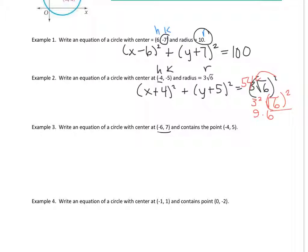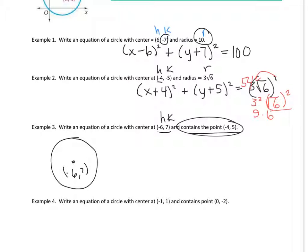This one is different: write an equation of a circle with center (negative 6, 7) — this is h and k — and containing the point (negative 4, 5). So the center is at negative 6, 7, and another point on the circle is negative 4, 5. This time we don't have the radius; we need to figure out what the radius is. The distance between the center and the point on the circle will be the radius.